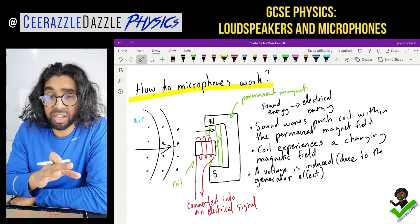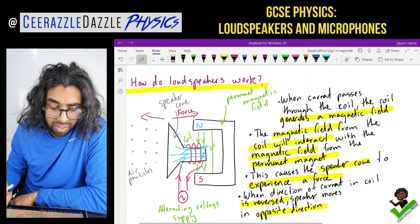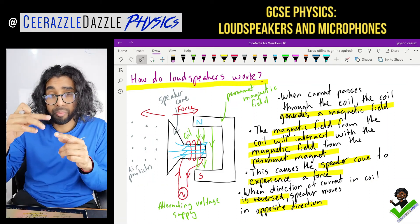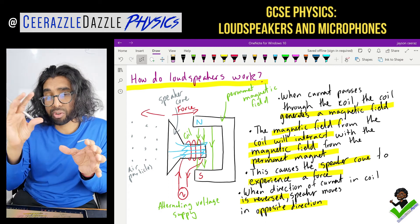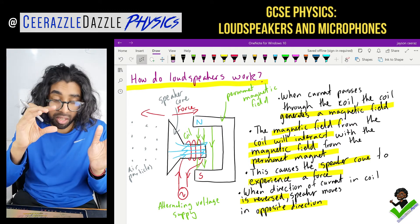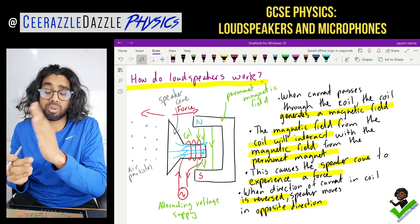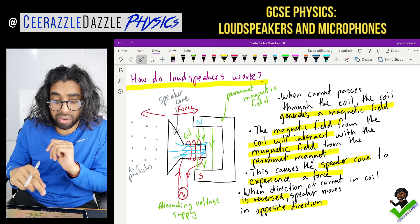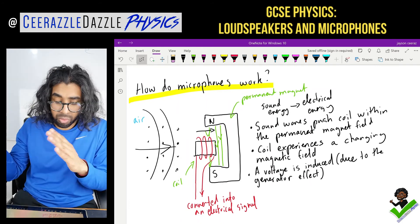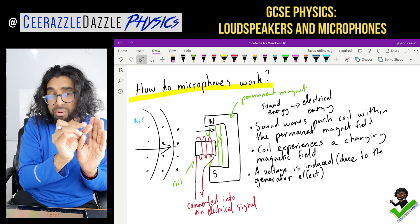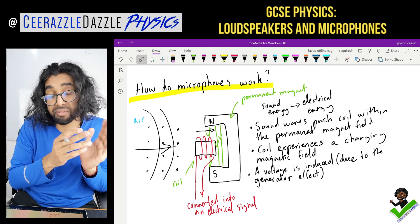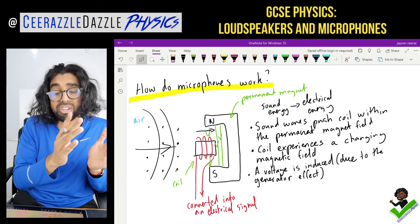Quick recap on both. For the loudspeaker: you pass current into the coil, the coil creates its own magnetic field which interacts with the permanent magnet's field, causing a force. Swapping the direction of current reverses the force, causing the cone to oscillate. For the microphone: sound waves come in and push the coil into the magnetic field. The coil experiences a changing magnetic field, a voltage is induced, and the sound waves are converted into electrical signals.